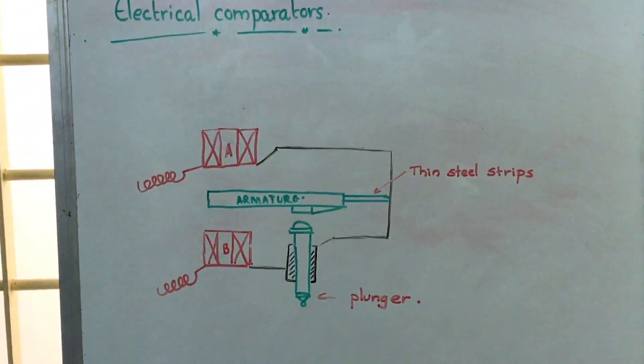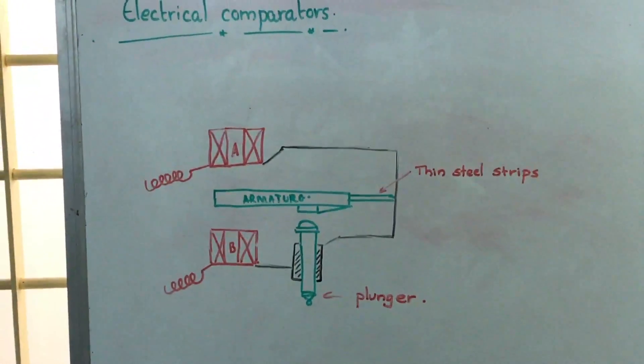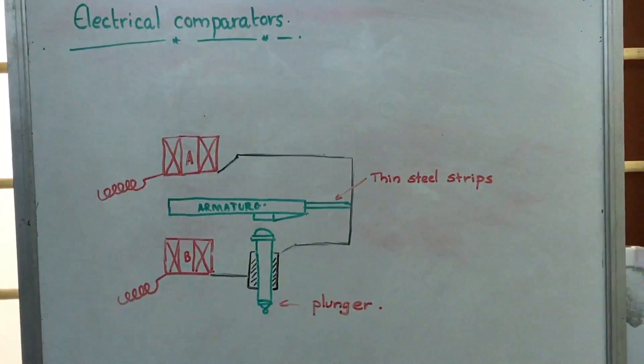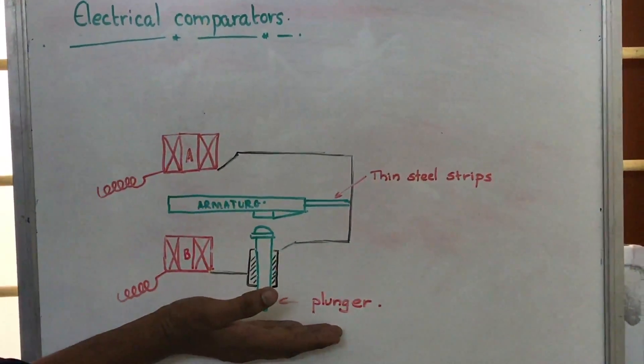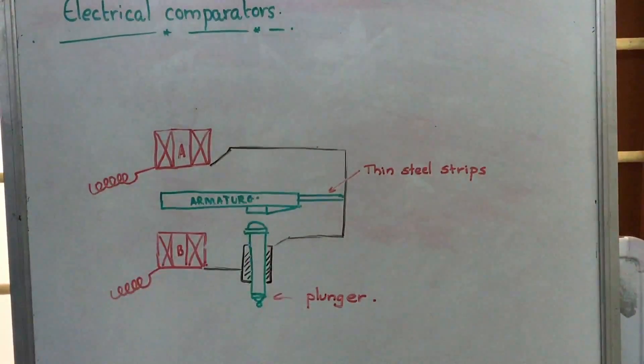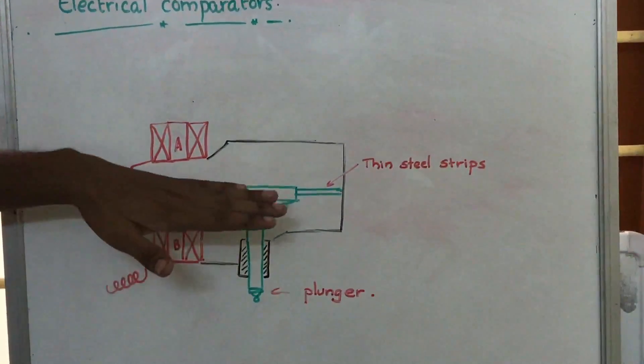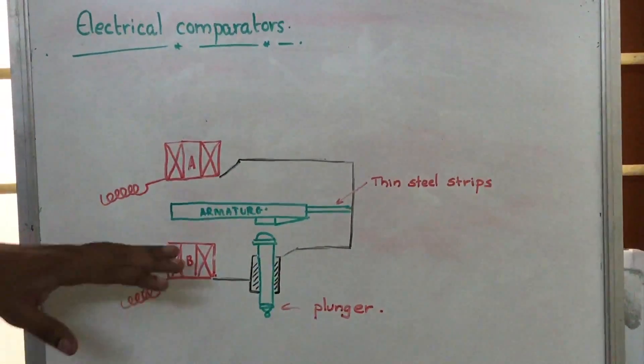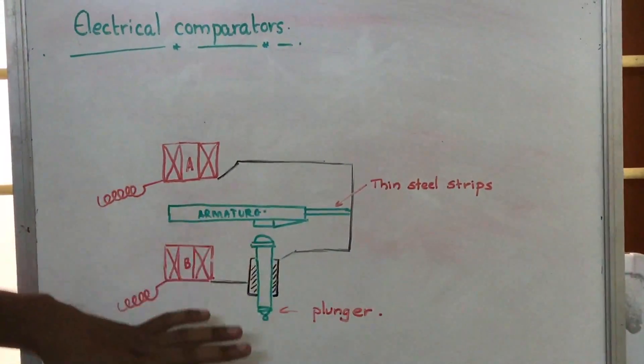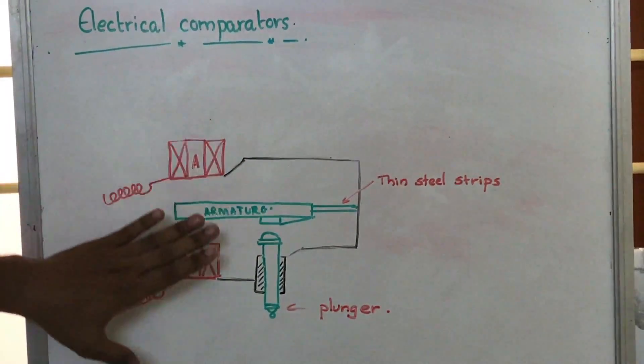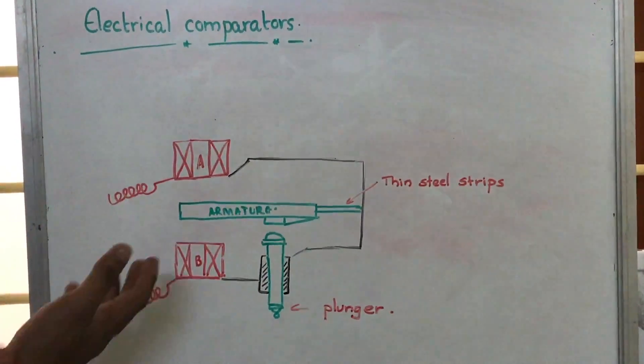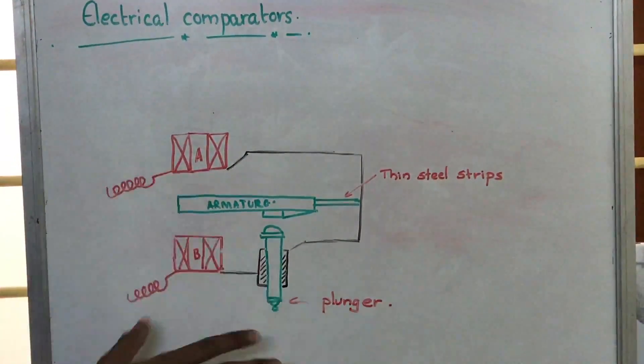When we insert an object whose dimensions will be measured, the plunger will move. Because of the movement of the plunger, this armature will have some deflection. Because of the deflection of this armature, there will be an induced EMF in one of these coils, or some properties like inductive resistance will change.